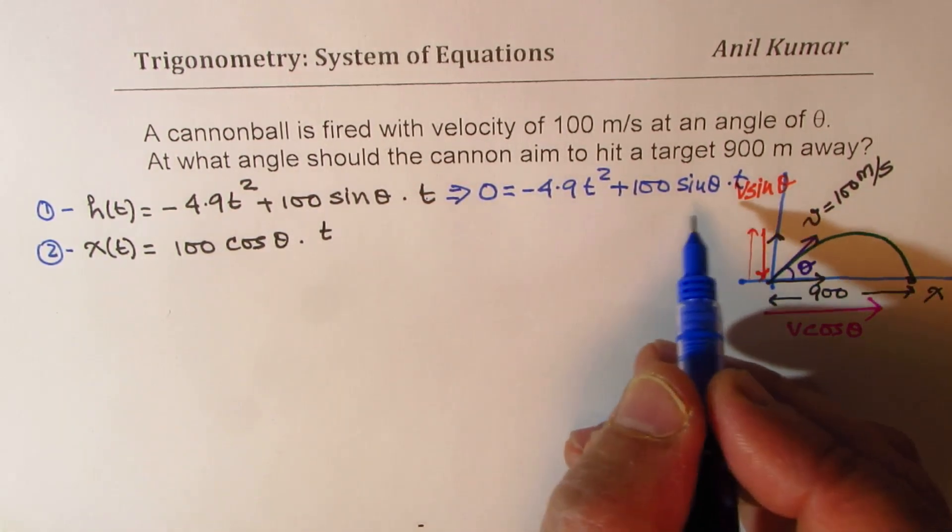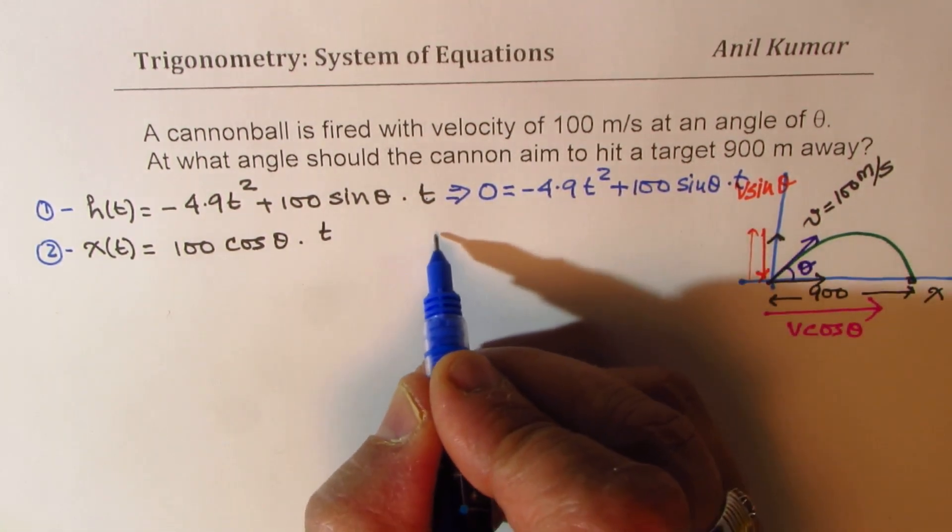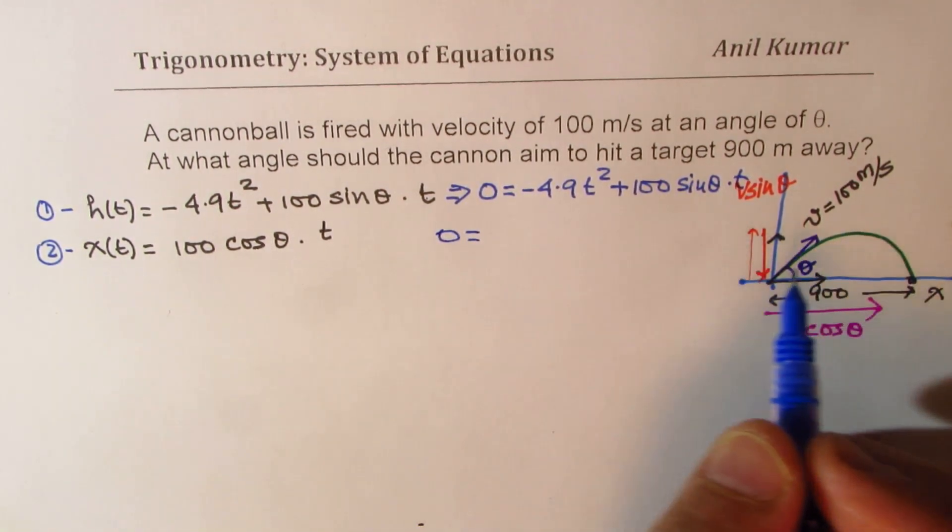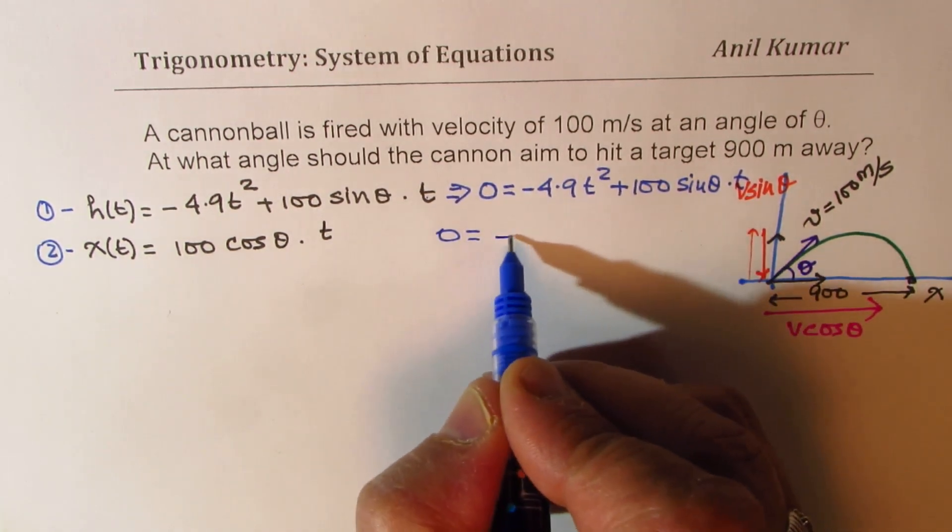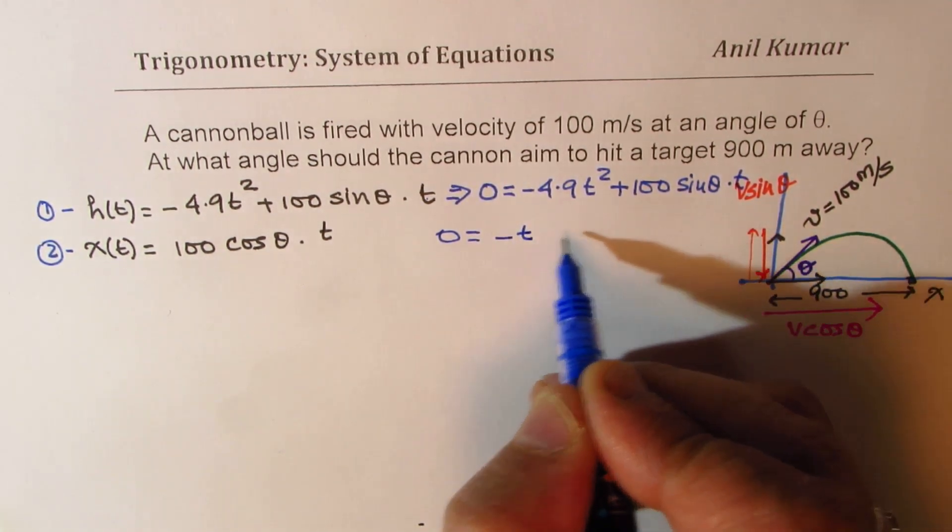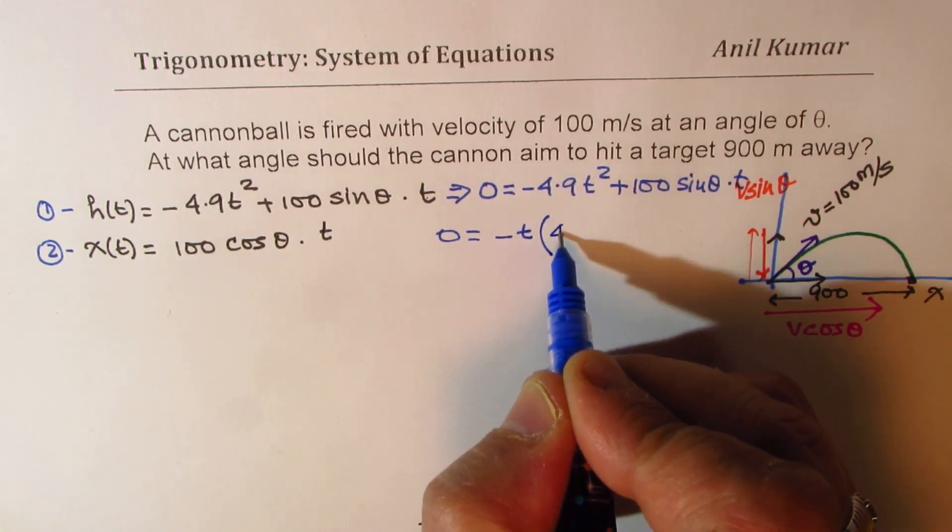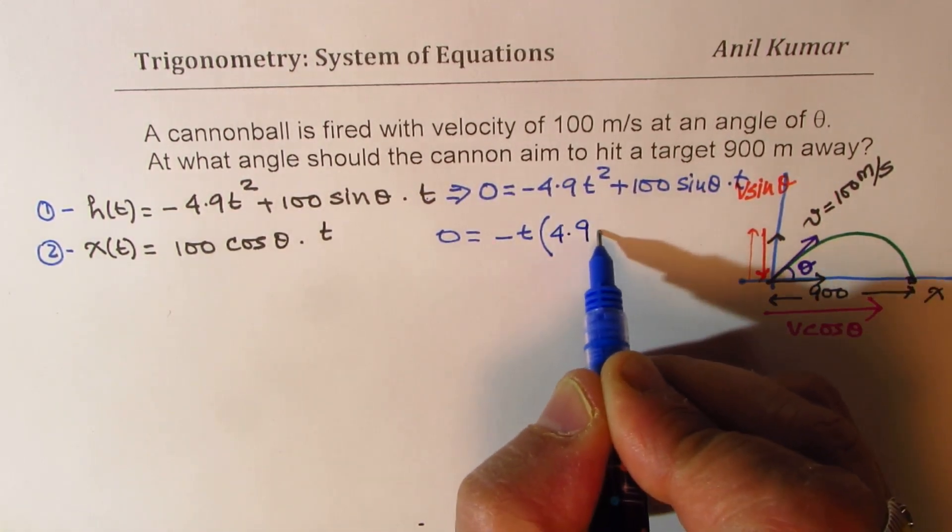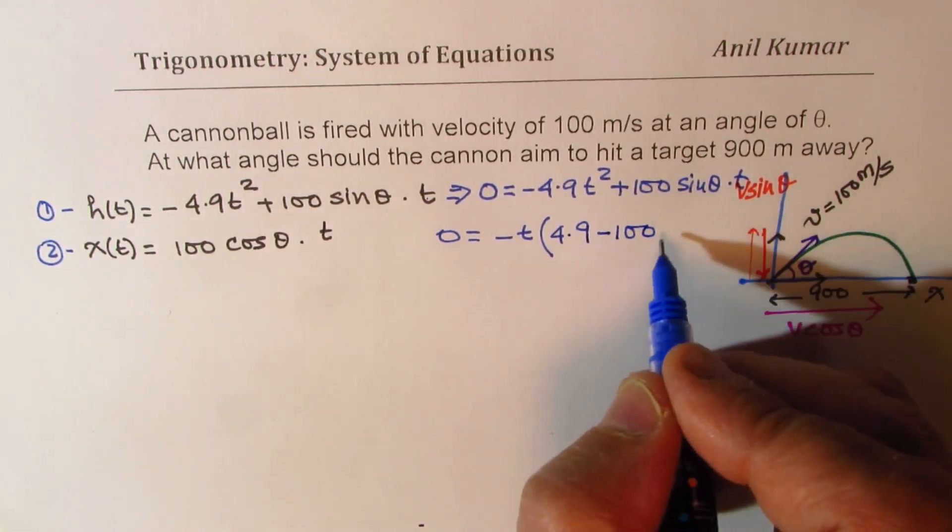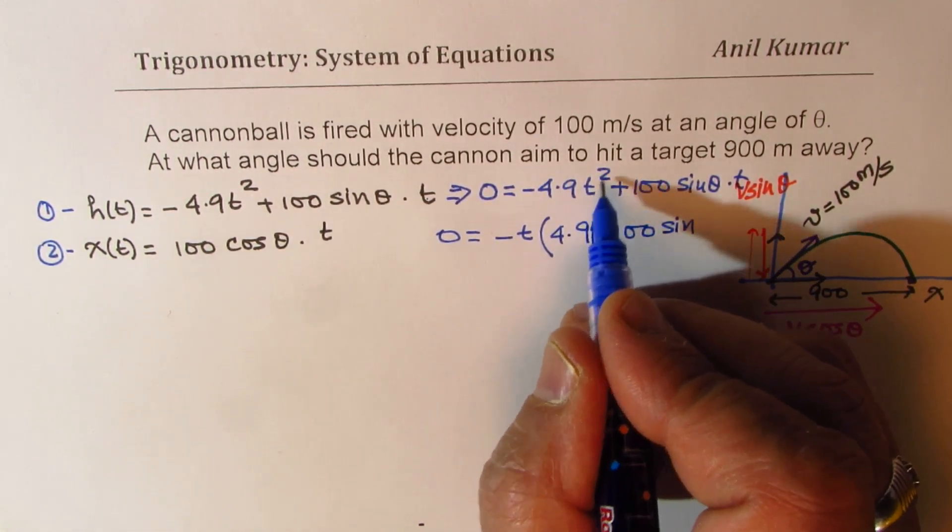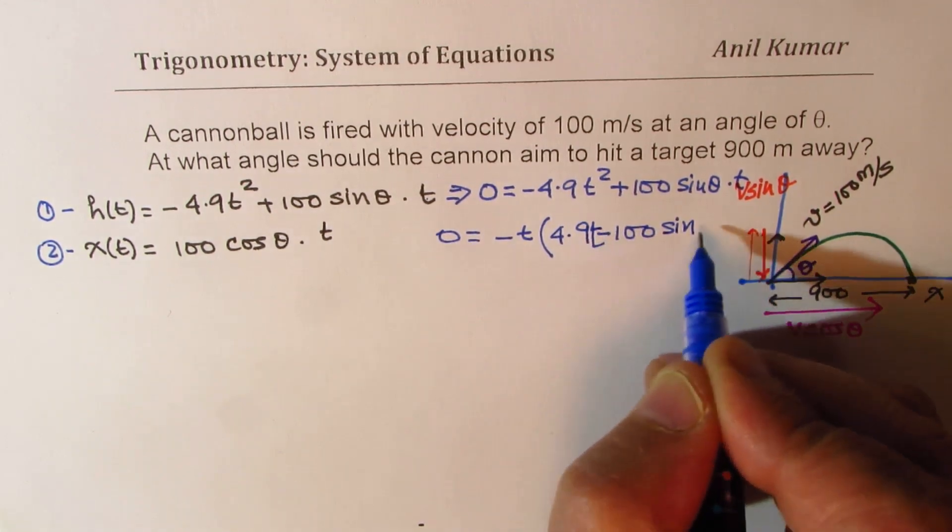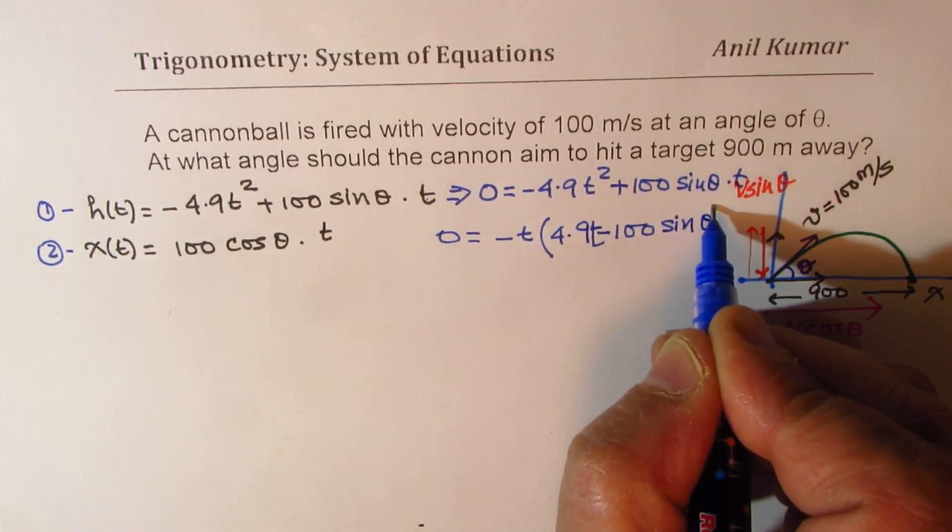Or, we could actually factor this and we could write this as 0 equals to... So if I factor t out, let us say minus t, then what do I get? I get 4.9 minus 100 sin theta. 4.9 t basically. Yeah, t is t squared, right? So 4.9 t minus 100 sin theta.